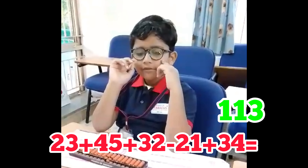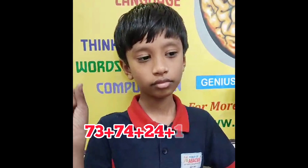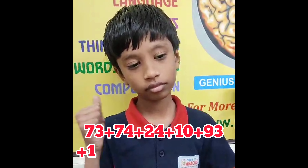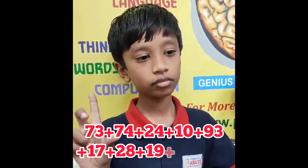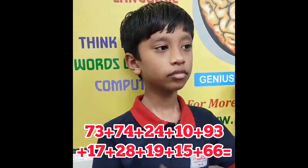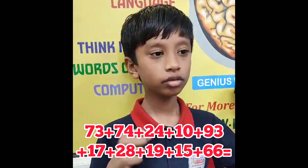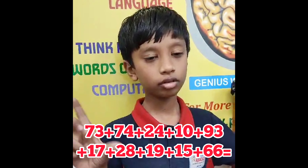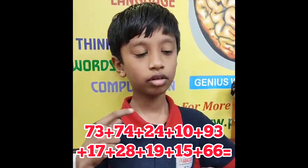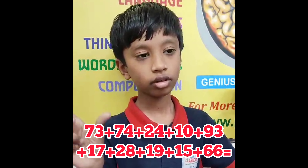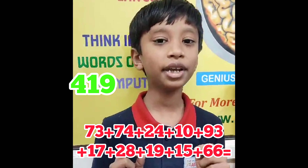Yes. 73, 74, 24, 10, 93, 17, 28, 19, 15, 66. That is 419. 1 digit 5 row.